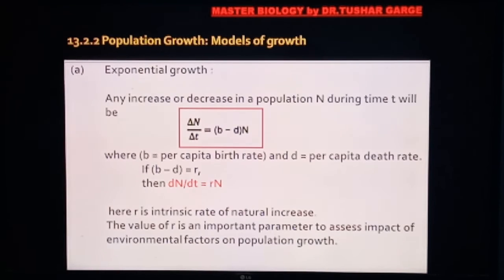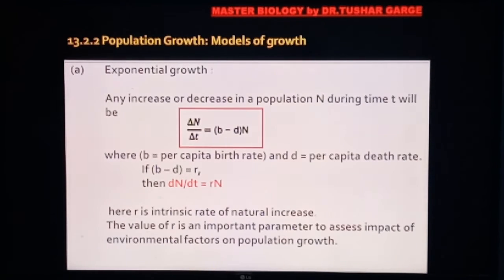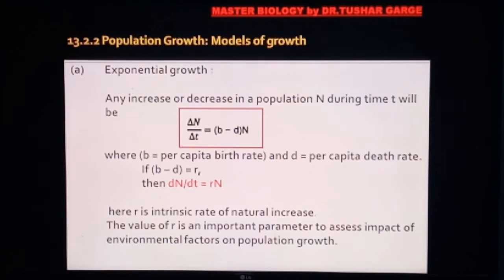To depict exponential growth, we use the formula: dN/dt = (b − d) × N, where b is per capita birth rate (natality) and d is per capita death rate (mortality). The function (b − d) is represented as r, which stands for the intrinsic rate of natural increase. So our formula becomes: dN/dt = rN. The value of r is an important parameter used to assess population growth and the impact of environmental factors.